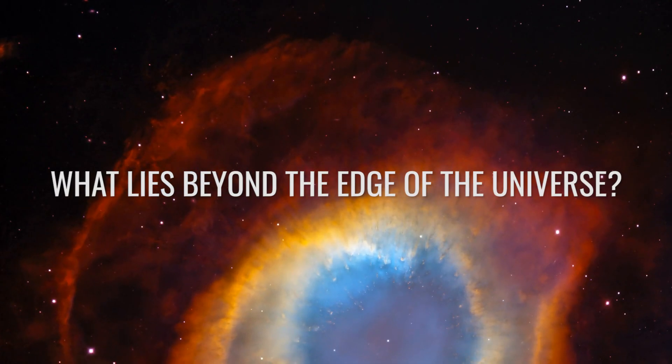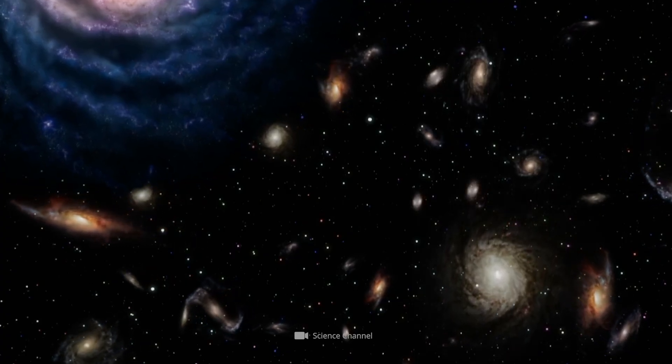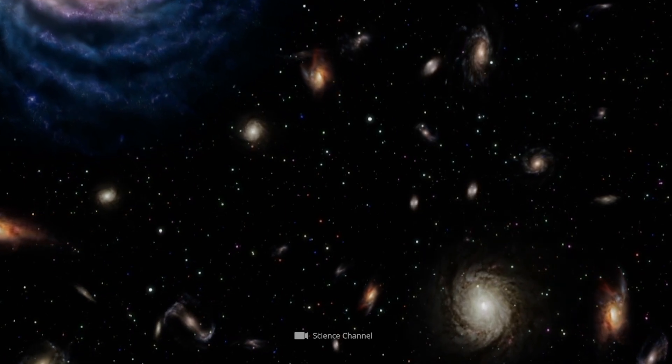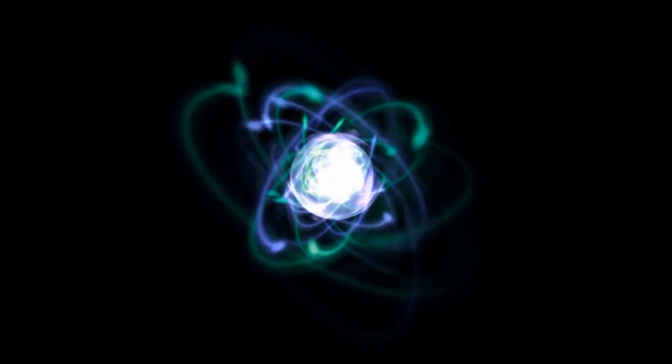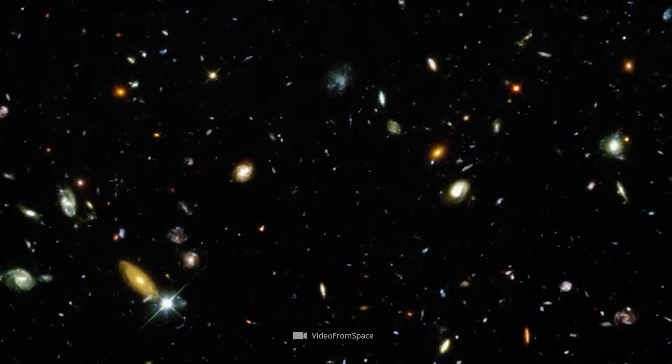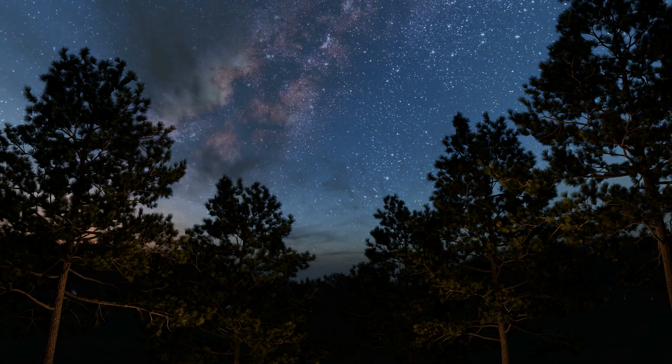What lies beyond the edge of the observable universe? In essence, the cosmos has grown at an ever-increasing rate since its creation. Cosmologists estimate that the oldest photons we can observe have traveled a distance of 45 to 47 billion light years since the Big Bang. This means that our observable universe is about 93 billion light years wide, plus or minus a few light years.